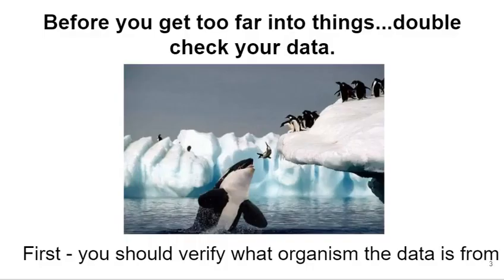Before you get too far into things, you should double-check your data, because up until this point you haven't been able to look at anything other than A's, T's, C's, and G's and their associated quality data. Generally, when you send samples off to the lab, what you sent off gets sequenced and that's what gets returned to you. But things can go wrong, and samples can get mixed up. You don't want to get too far into an analysis without knowing that what you're analyzing is actually your own data — not a contaminant from the lab or your own DNA that accidentally got into a sample.